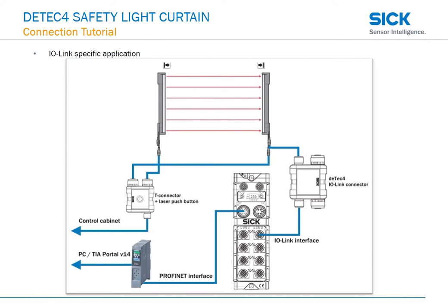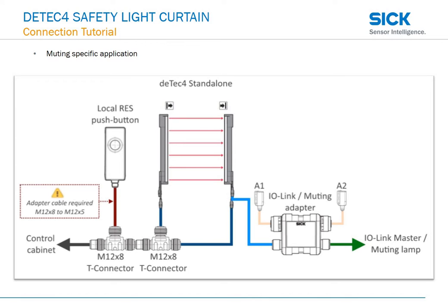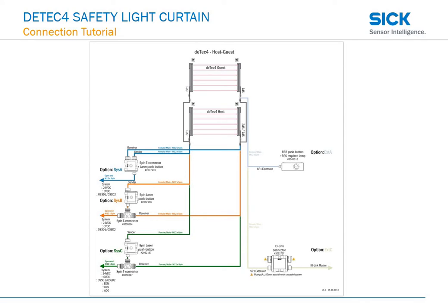Moving ahead, I'll be showing two application-specific connection diagrams. The first being aisle link, and here's the muting-specific application connection diagram. Here's the host-guest system and three options on the sender side. I'm also showing two options on the receiver side.